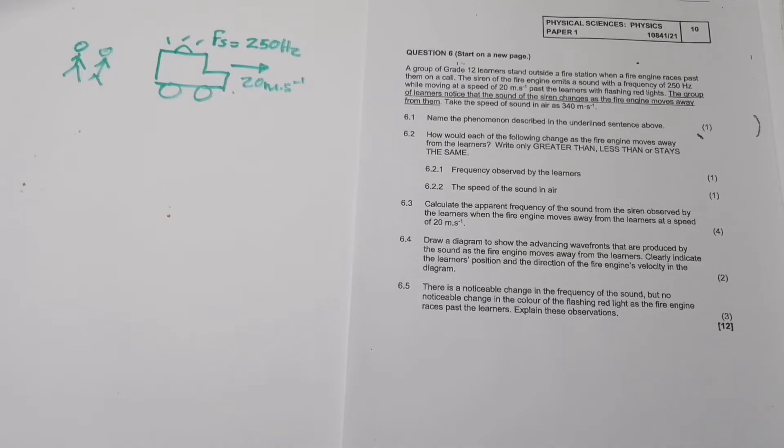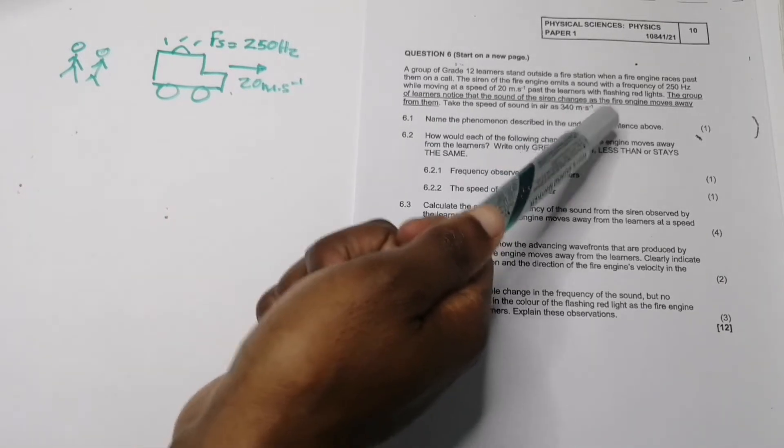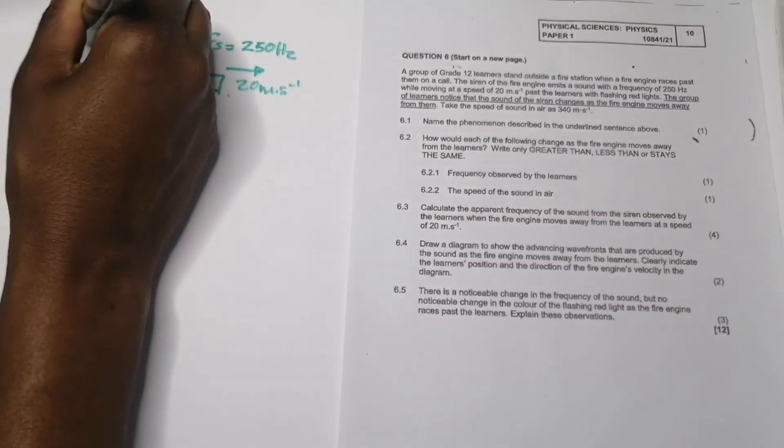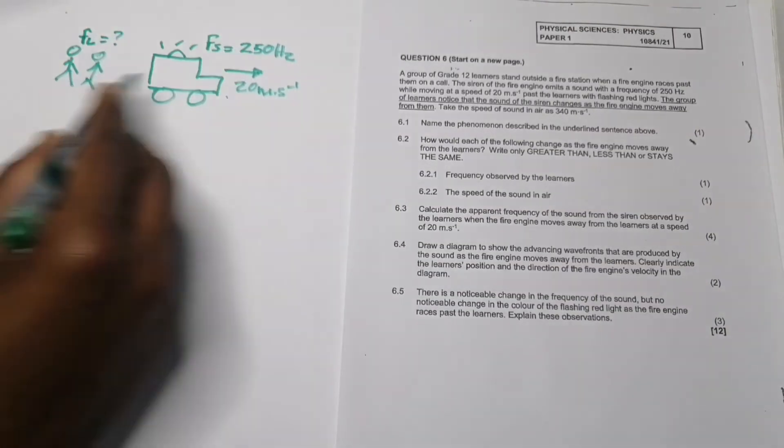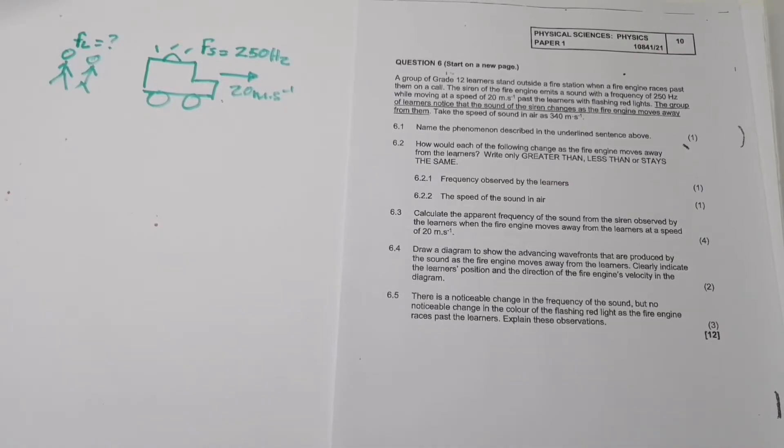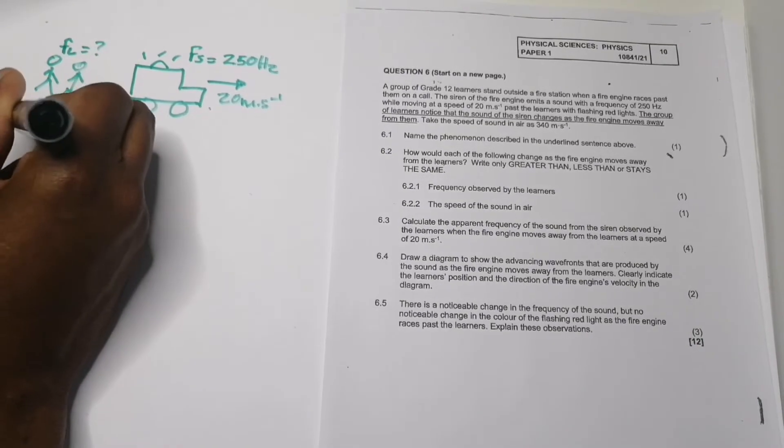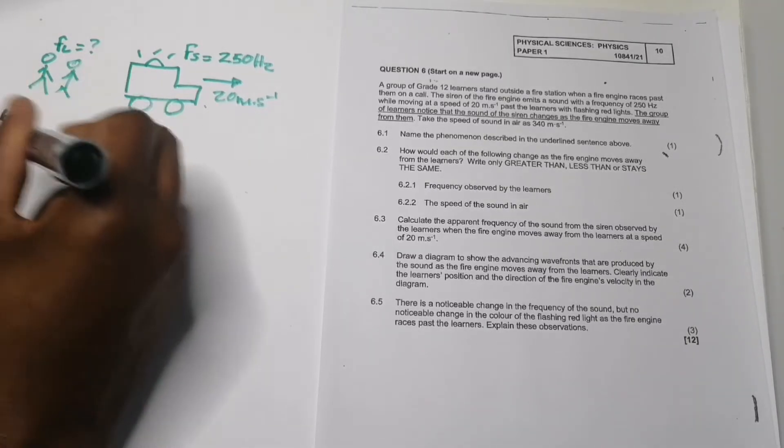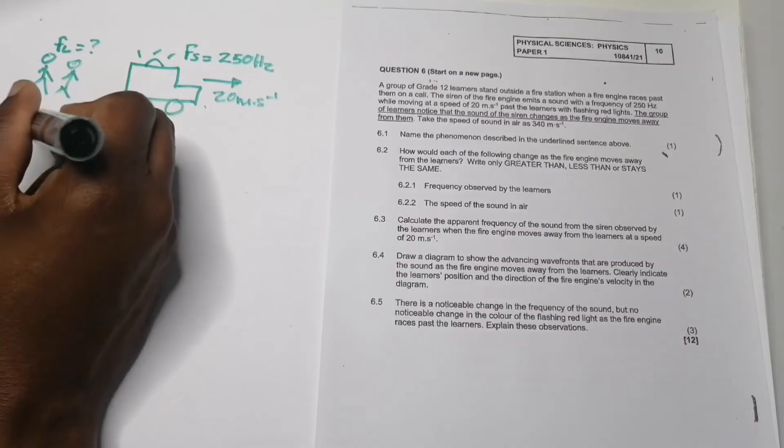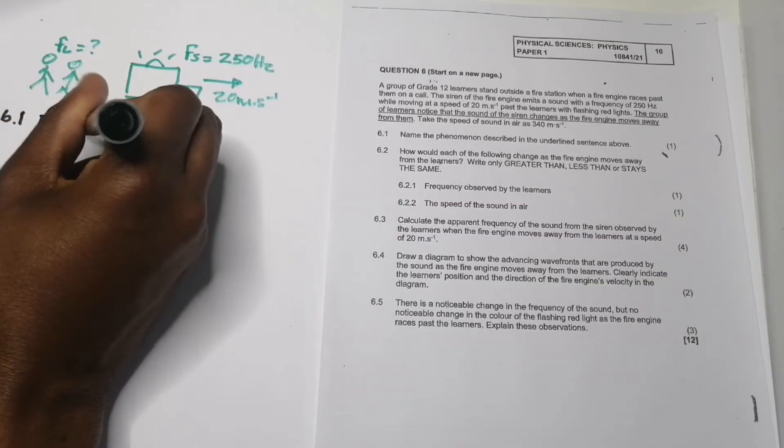As it moves away, they notice that the observed frequency is actually different from the frequency that is emitted. They say first, name the phenomenon described in the underlined sentence. That is the Doppler effect - the apparent change in frequency or pitch of sound when the source and listener are moving relative to each other.